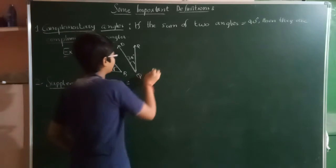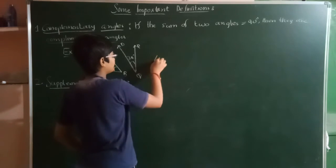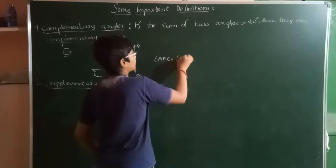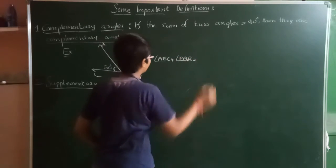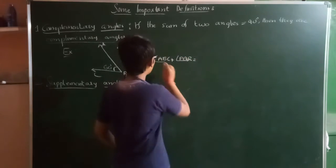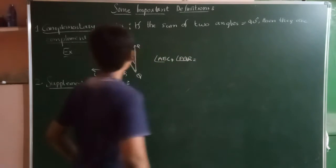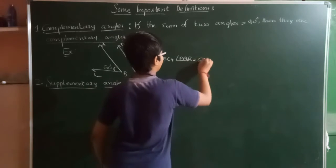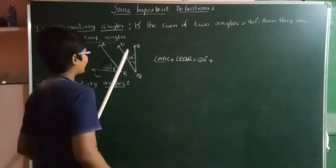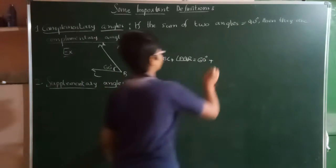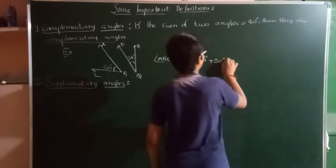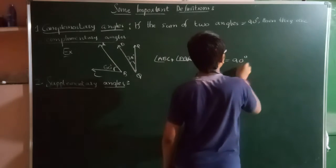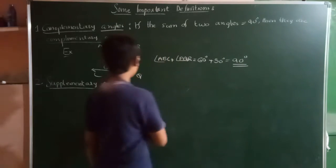Now, if we add these both angles — angle ABC plus angle PQR — angle ABC is 60 degrees plus angle PQR is 30 degrees, and this gives us 90 degrees. The sum of them is 90 degrees.